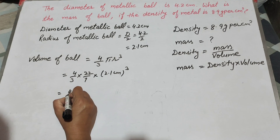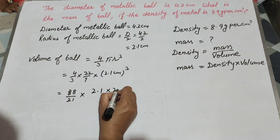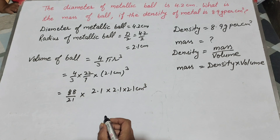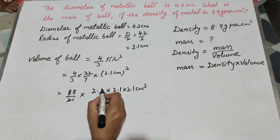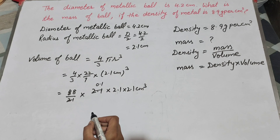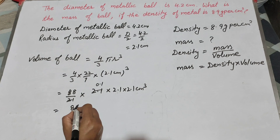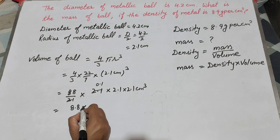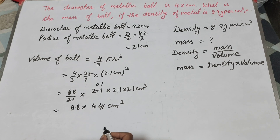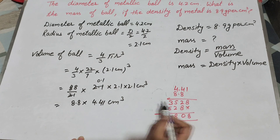It is equal to 4 multiplied by 22, which is 88, over 21, times 2.1 × 2.1 × 2.1 centimeters cubed. The 21 in the denominator and 2.1 in the numerator cancel, giving 0.1. So 88 multiplied by 0.1 gives 8.8. Then 2.1 multiplied by 2.1 gives 4.41 centimeters cubed. So 8.8 multiplied by 4.41 gives 38.808.